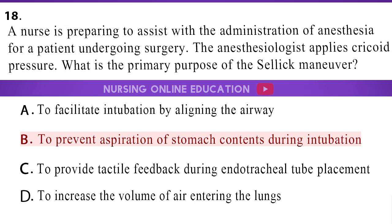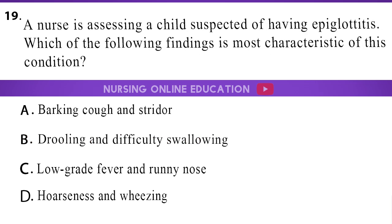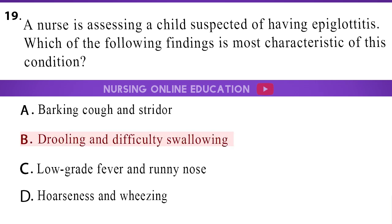The answer is option B: To prevent aspiration of stomach contents during intubation. A nurse is assessing a child suspected of having epiglottitis. Which of the following findings is most characteristic of this condition? A. A barking cough and stridor. B. Drooling and difficulty swallowing. C. Low-grade fever and runny nose. D. Hoarseness and wheezing. The answer is option B: Drooling and difficulty swallowing.